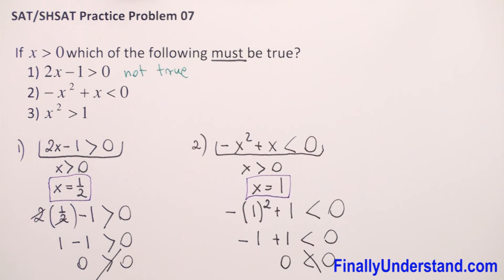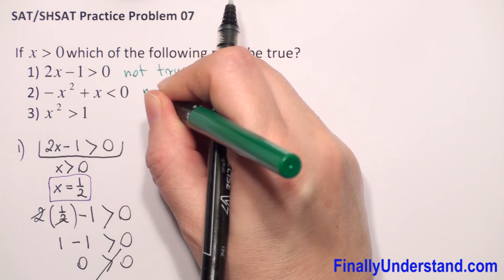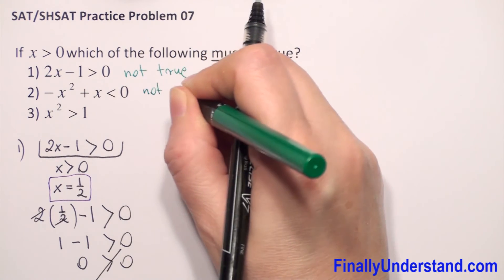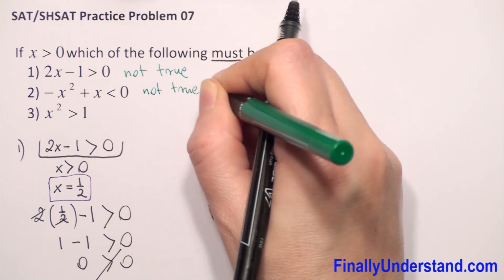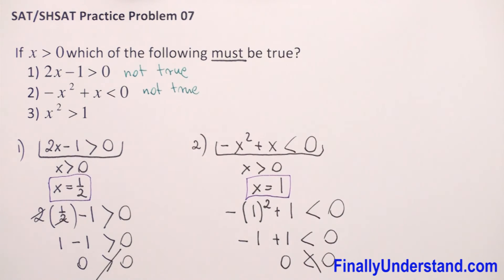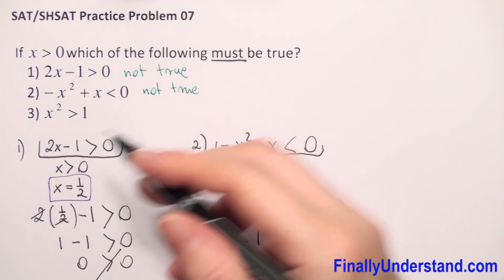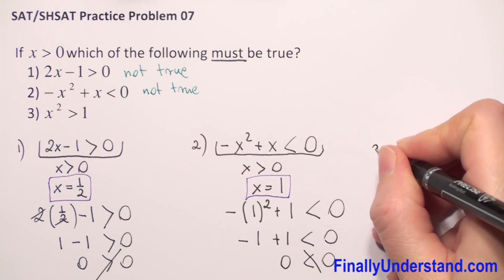So we can write that the second inequality is also not true for x greater than 0, because we found one example. It's always enough to find only one example — we don't have to look for more.